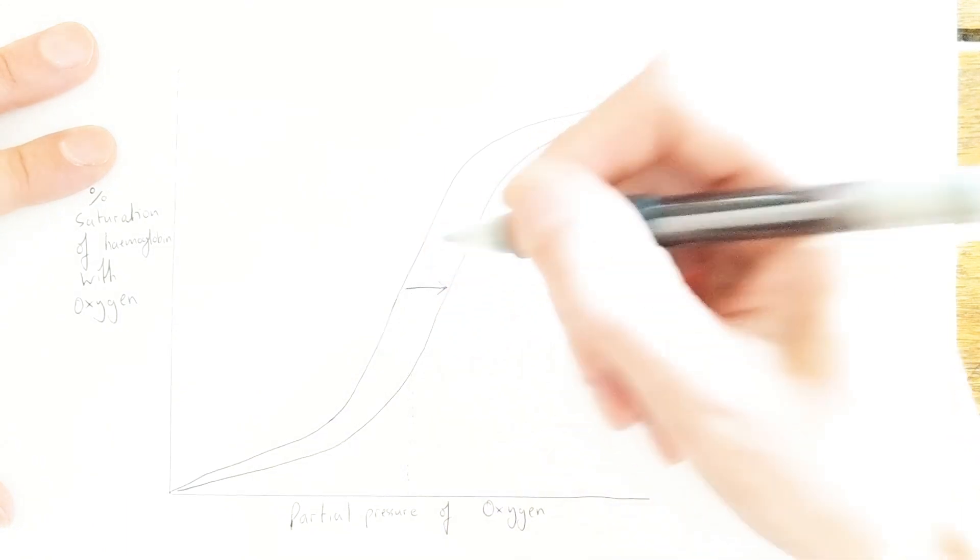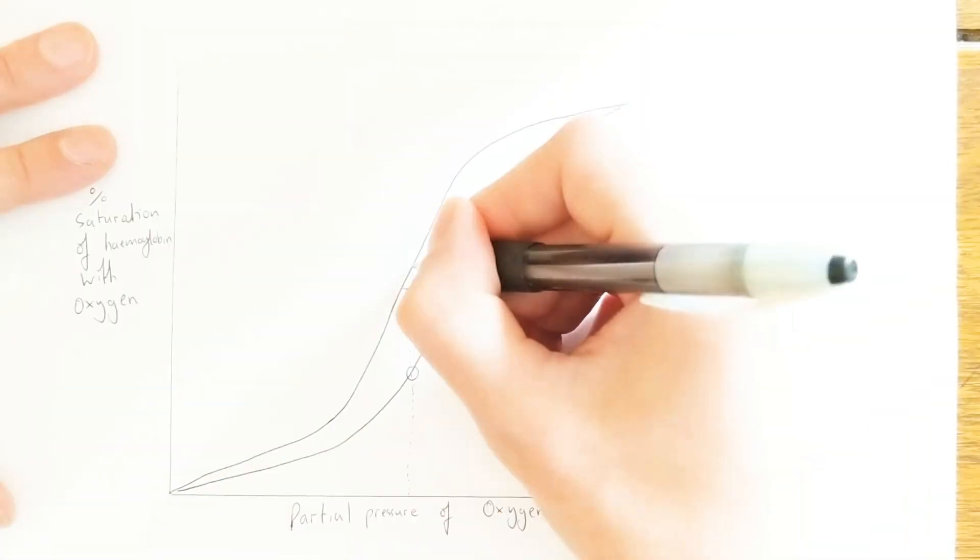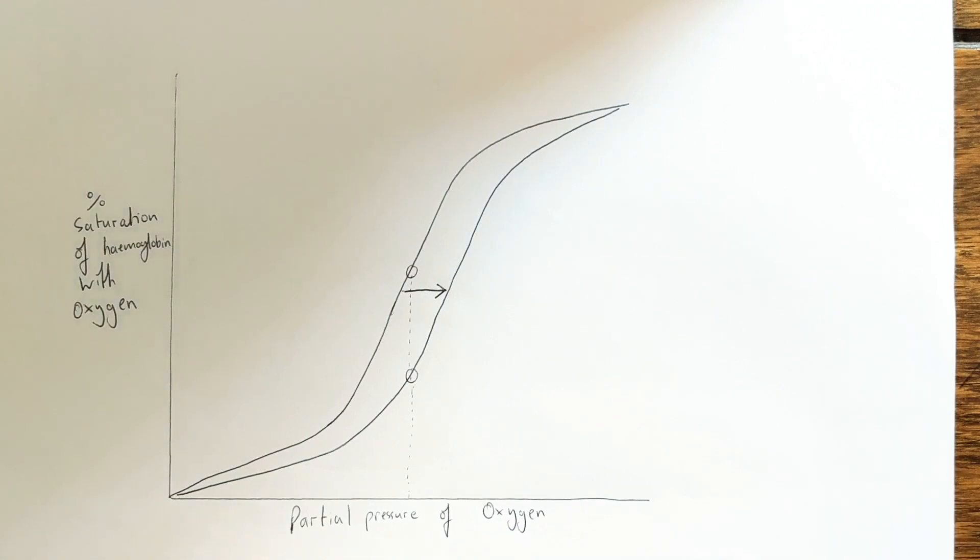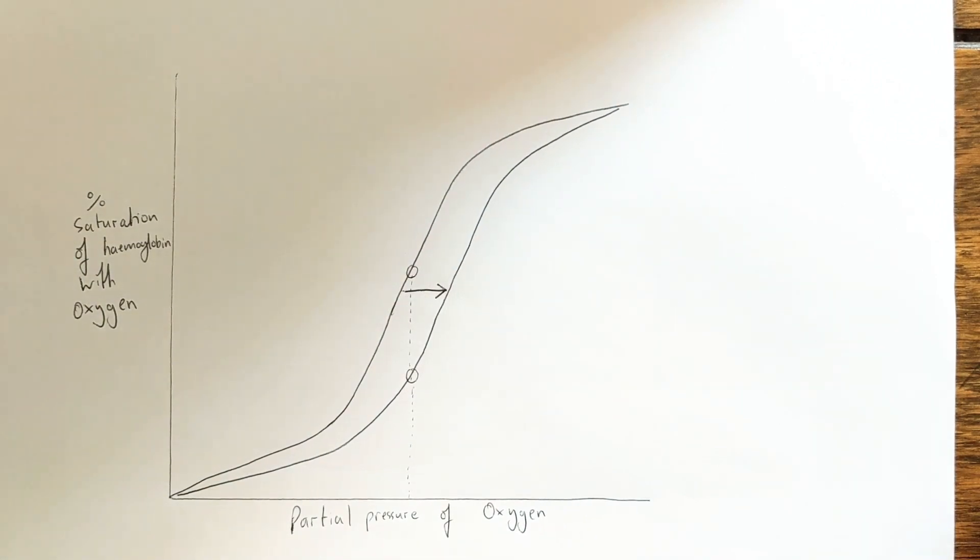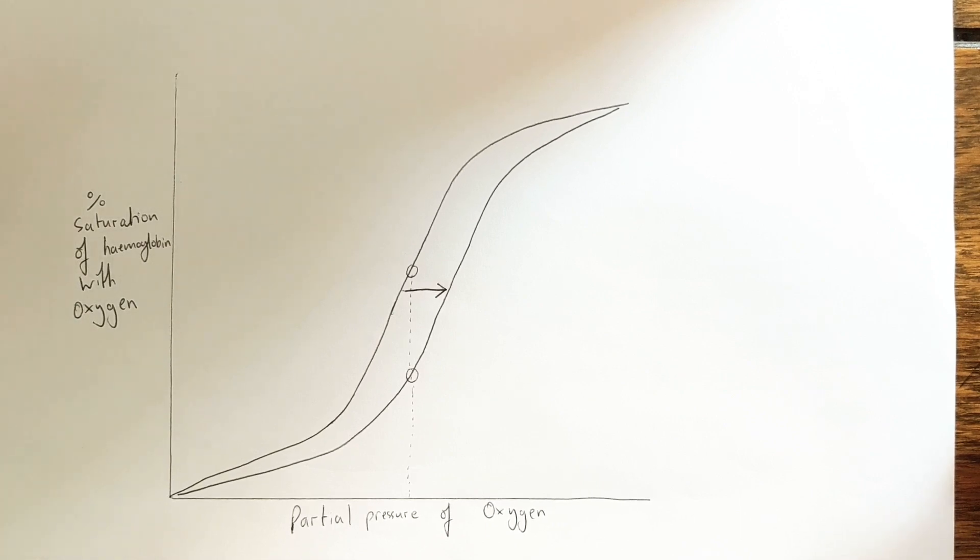the hemoglobin will have a lower saturation of oxygen. Now this is important because it allows the red blood cell and the hemoglobin to release oxygen to cells and tissues when they're respiring, which are likely to be the surroundings which have the highest concentration of carbon dioxide.